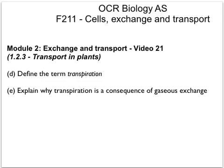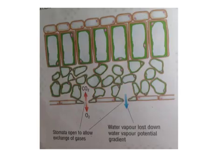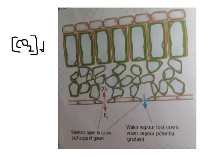Transpiration is a loss of water by evaporation from the aerial parts — such as the leaf — of a plant. Now, transpiration is a consequence of gas exchange. This diagram clearly shows gas exchange in the leaf: carbon dioxide is drawn in through the open stomata by diffusion because CO₂ is used in photosynthesis. As photosynthesis happens, the amount of CO₂ inside the leaf decreases, so the partial pressure and concentration of CO₂ inside decreases, creating a gradient that draws more CO₂ in from outside.